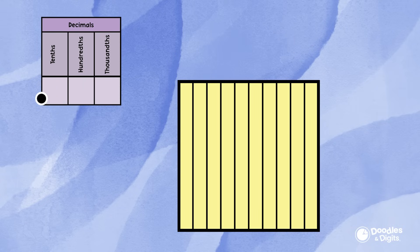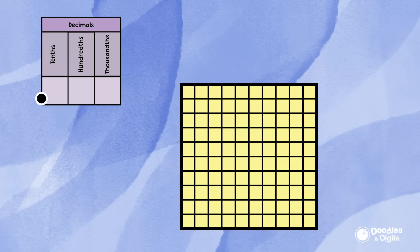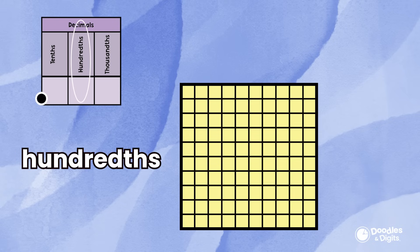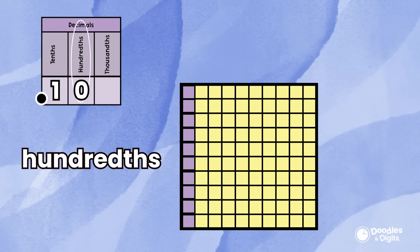To get to the hundredths, we're going to take those tenths and divide them into ten pieces themselves to get hundredths. So this same whole is now broken into a hundred pieces. These are hundredths. You can count each individual hundredth in the hundredths place. Notice that ten hundredths make one tenth.